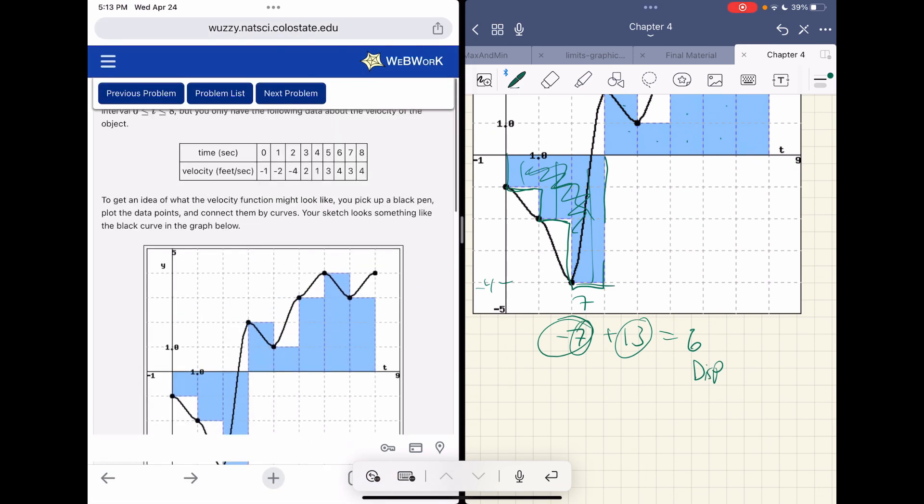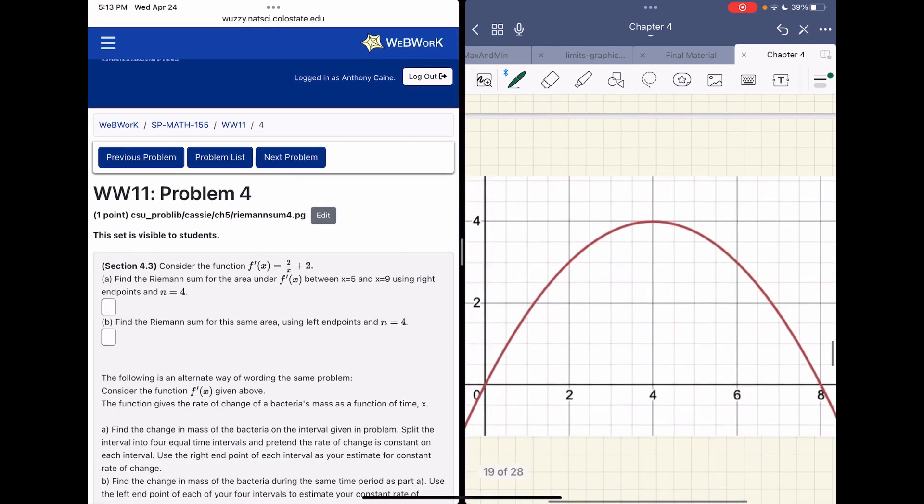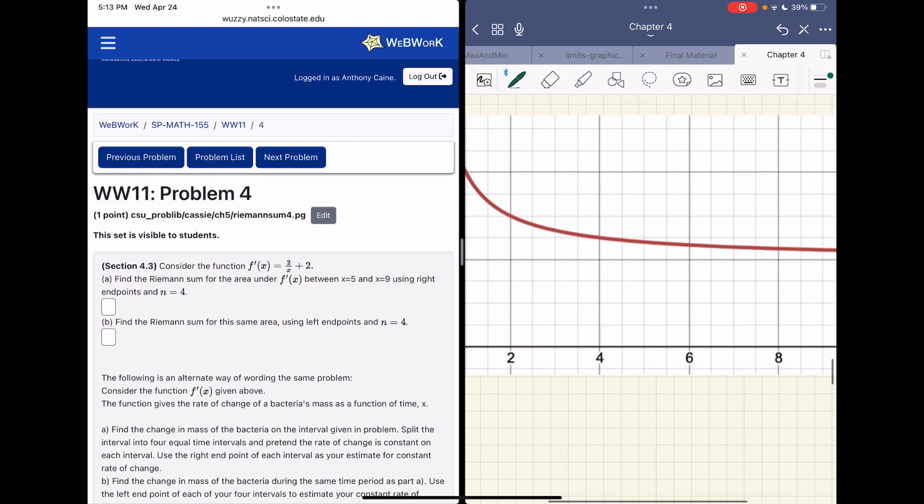This is the exact same idea. All right. So here I graphed out my f prime of x is two over x plus two. Find the Riemann sum going between five and nine. So right here is five and right here is nine.